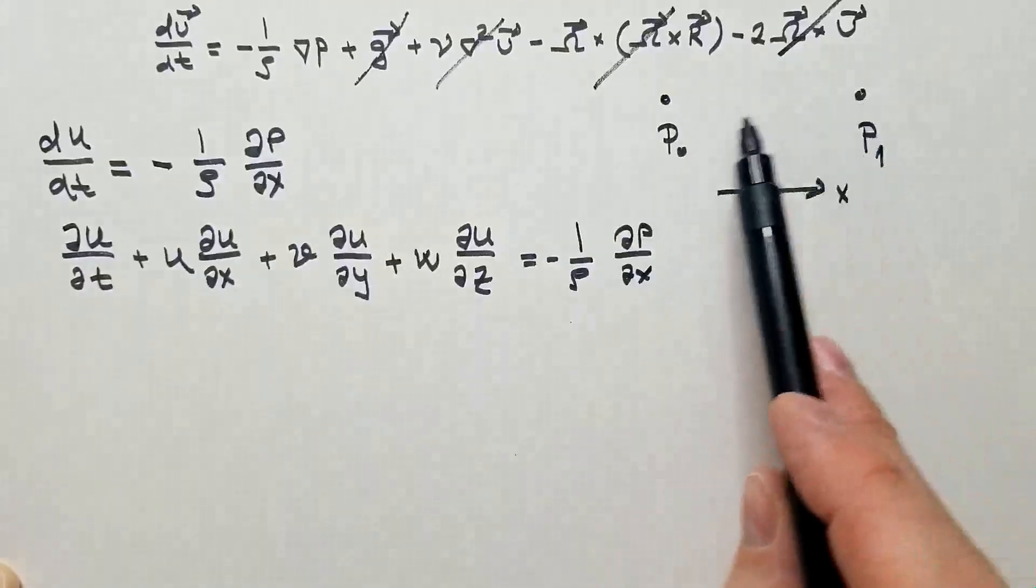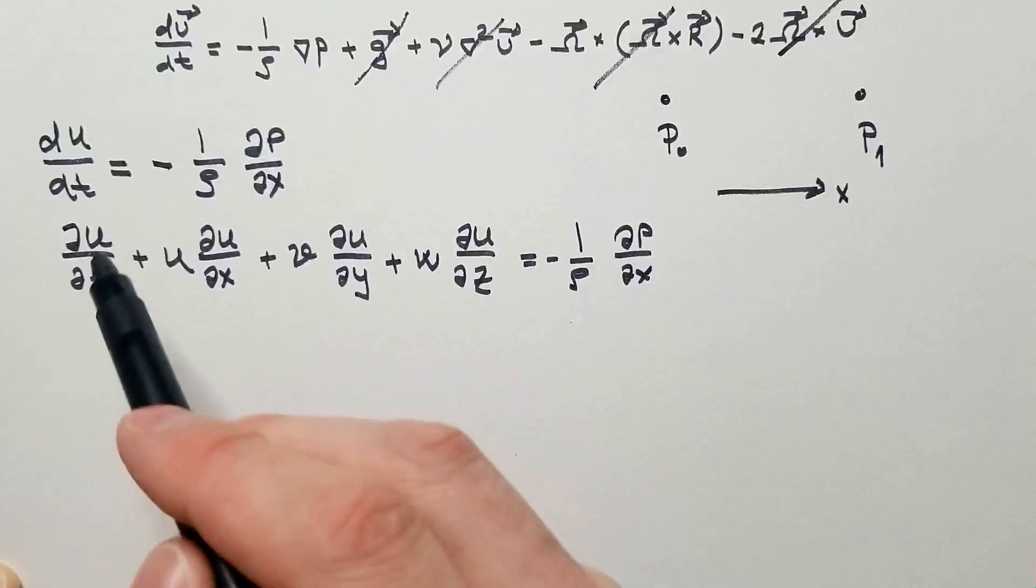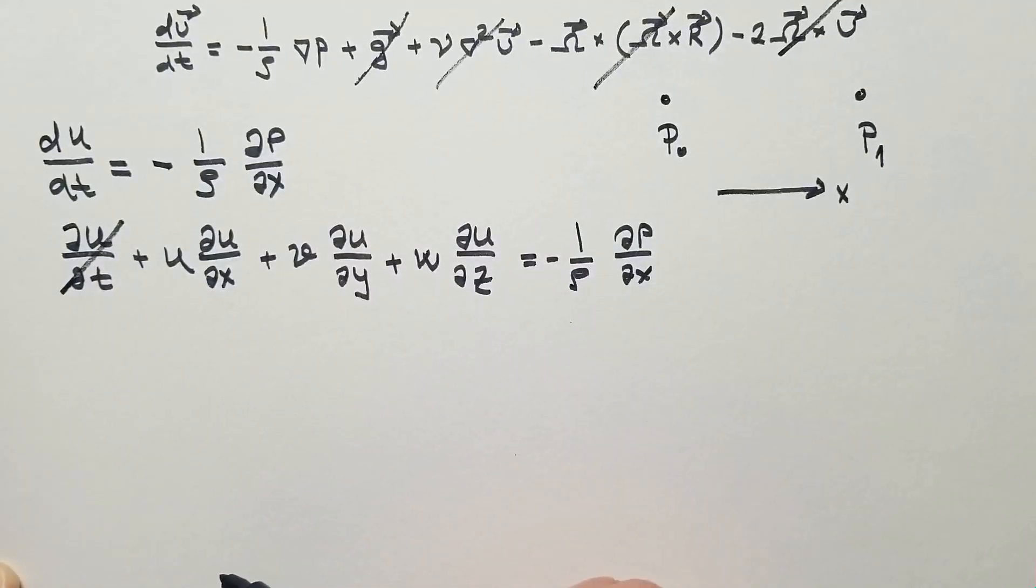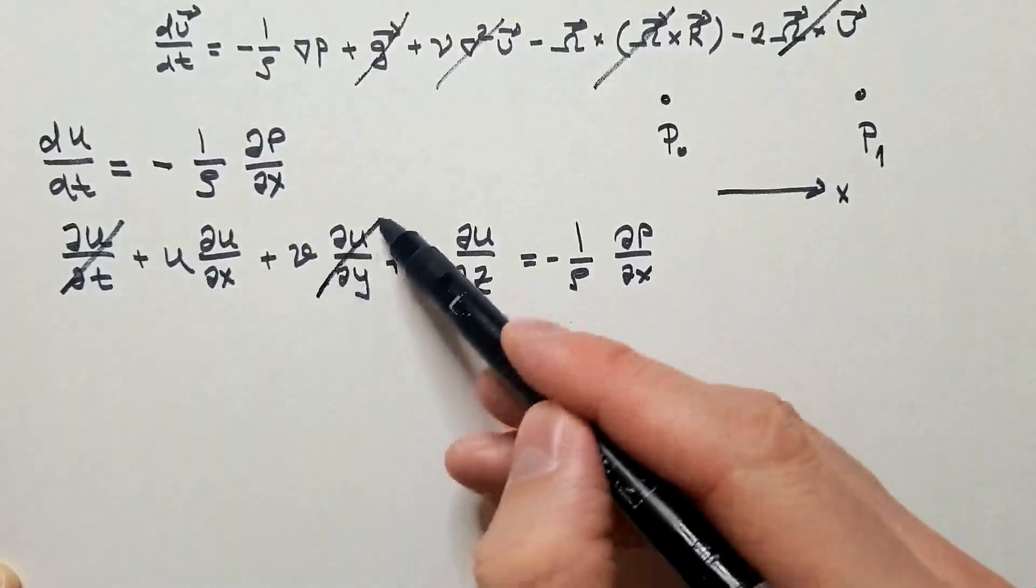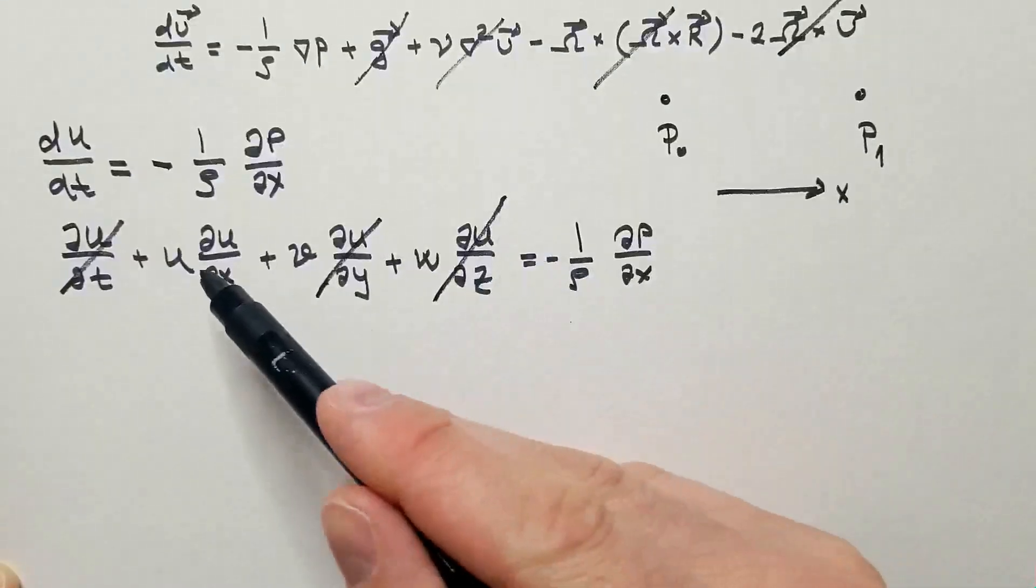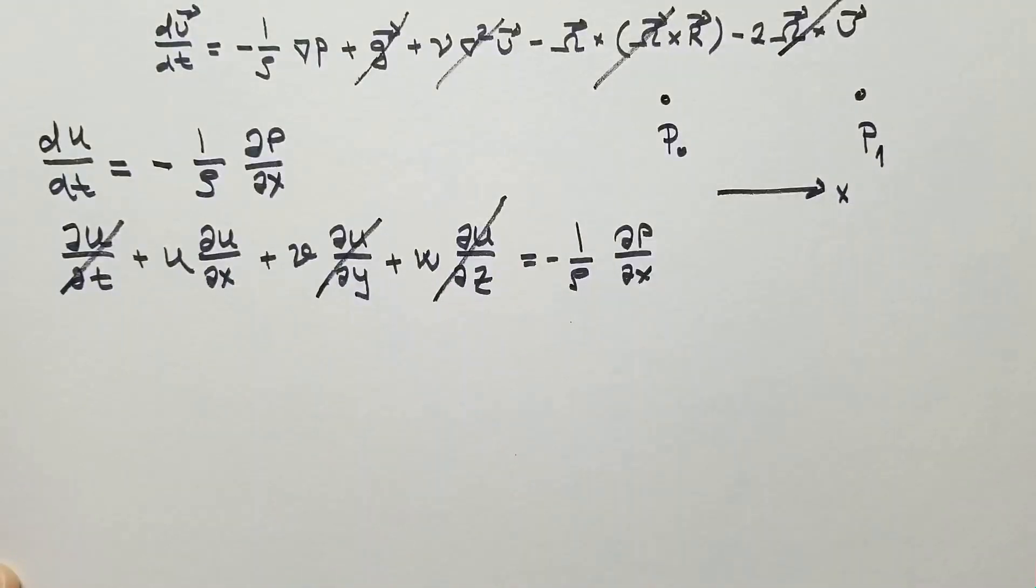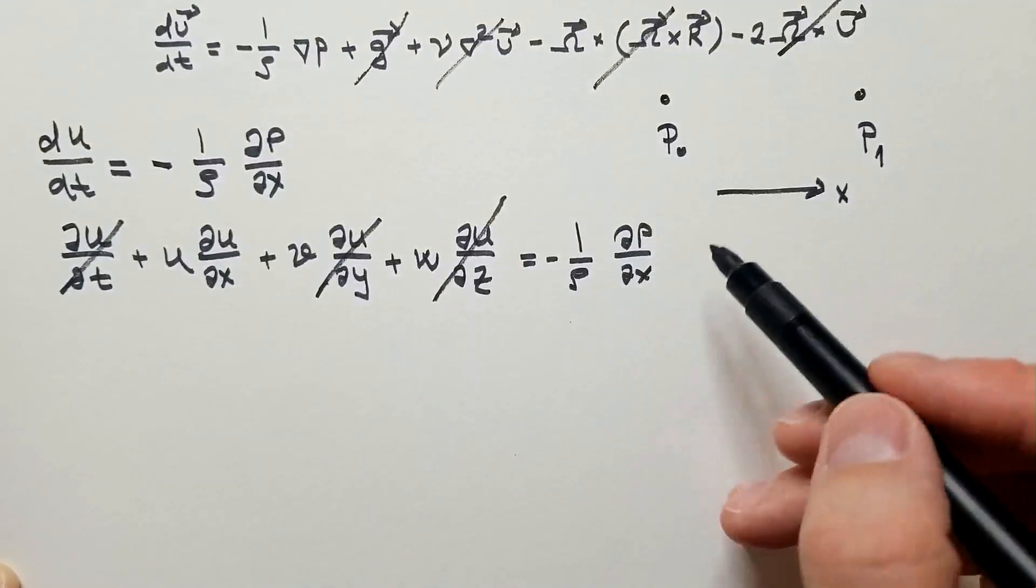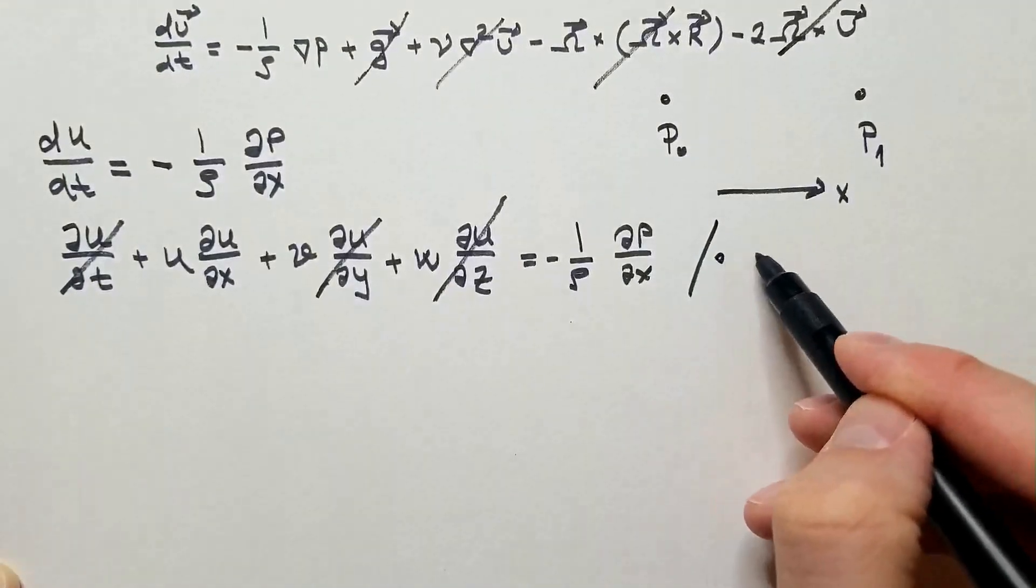This pressure difference is constant in time, so this disappears. There is no advection in the x or y directions, so these terms disappear. The only one that survives is u, delta u, delta x. I multiply the whole equation with dx.